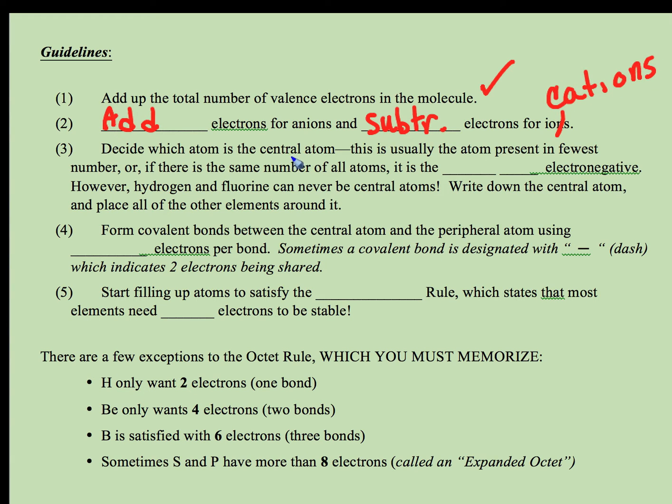Then we have to decide which is the central atom. Almost all the time, it's going to be the atom present in the fewest number. In PCl3, there's only one phosphorus, it will likely be the center. It's typically the least electronegative, though there are some exceptions. Hydrogen can never be in a center. Fluorine, because of the way it bonds, can never be a center.